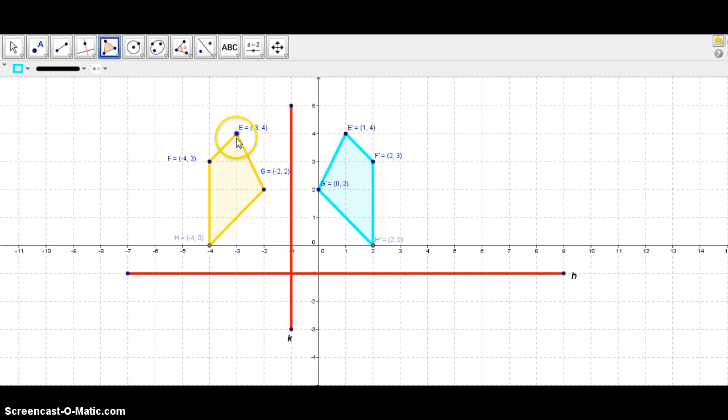This is our pre-image and this is the first image. And now we will reflect the image over line N. Same concept. Let's get the distance, vertical distance from the line, each point from line N.